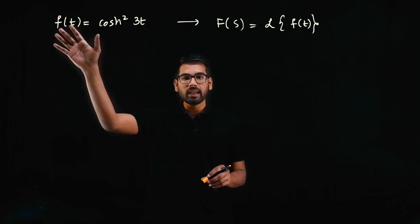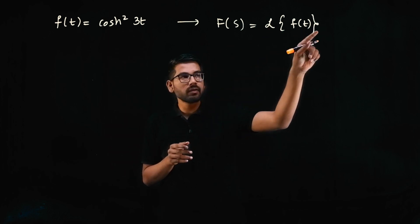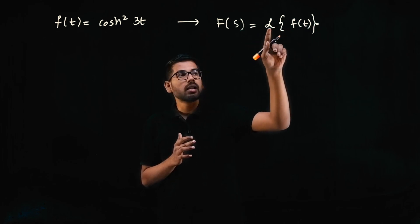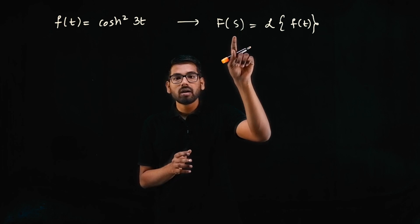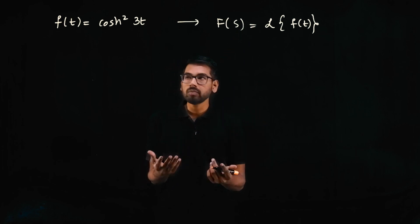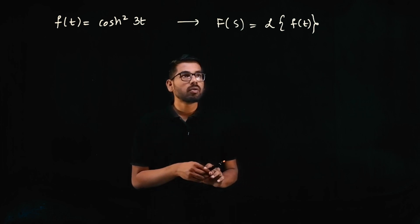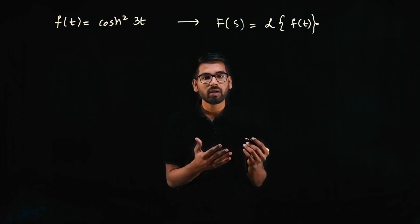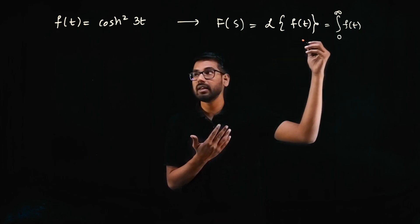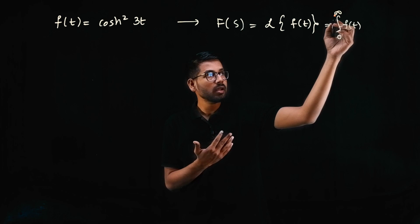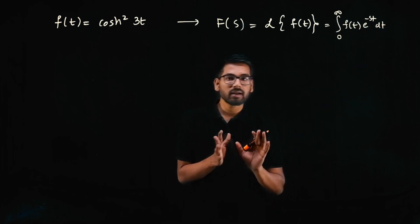The question is: given a function f in terms of t, we need to find the Laplace transform of f. The notation is L{f}, read as 'Laplace transform of f', and it equals F(s), because s is what we get after transforming the t-domain functions. So t is the time domain and s is the frequency domain. The definition of Laplace transform is the integral from 0 to infinity of e^(−st)·f(t) dt.